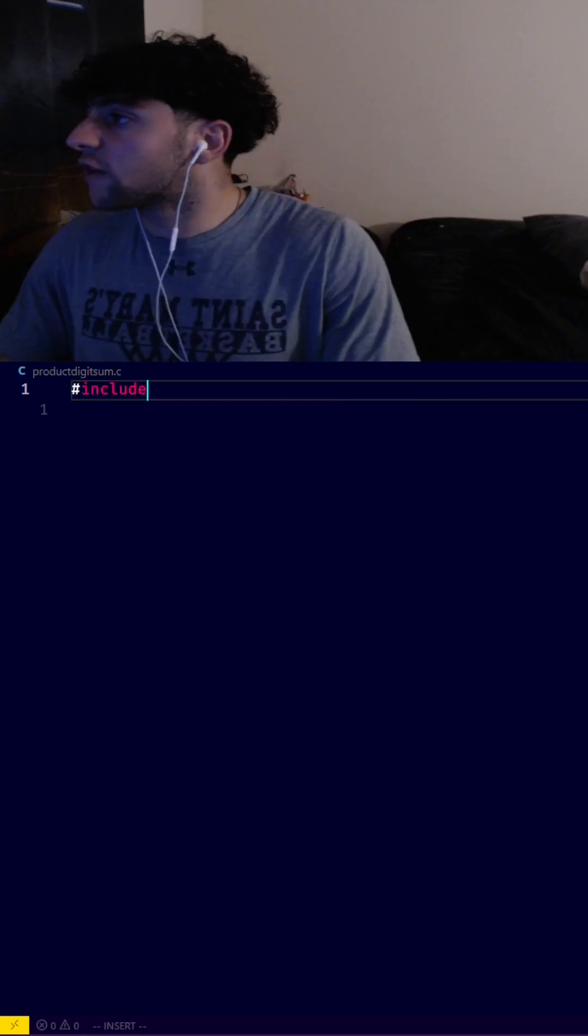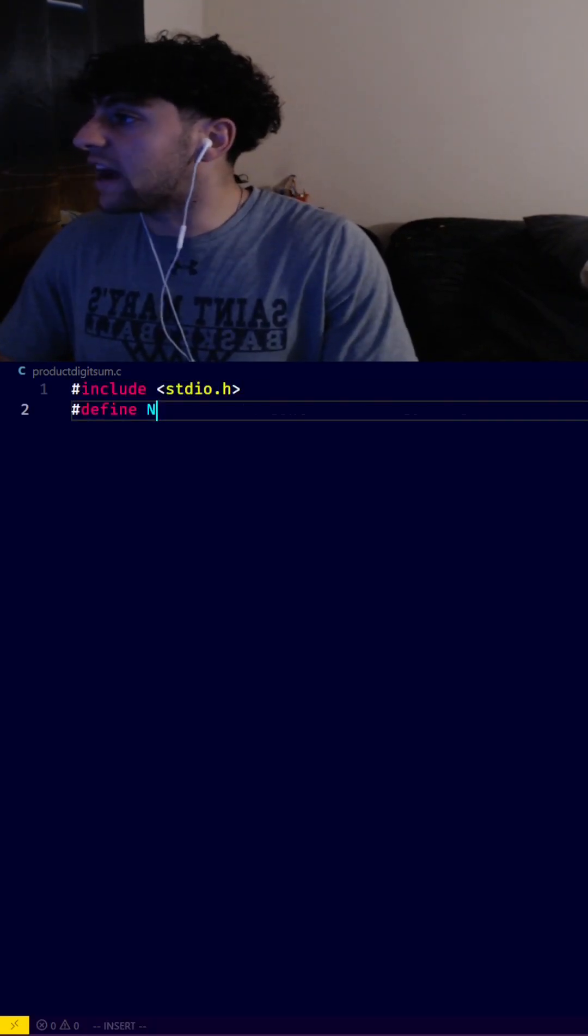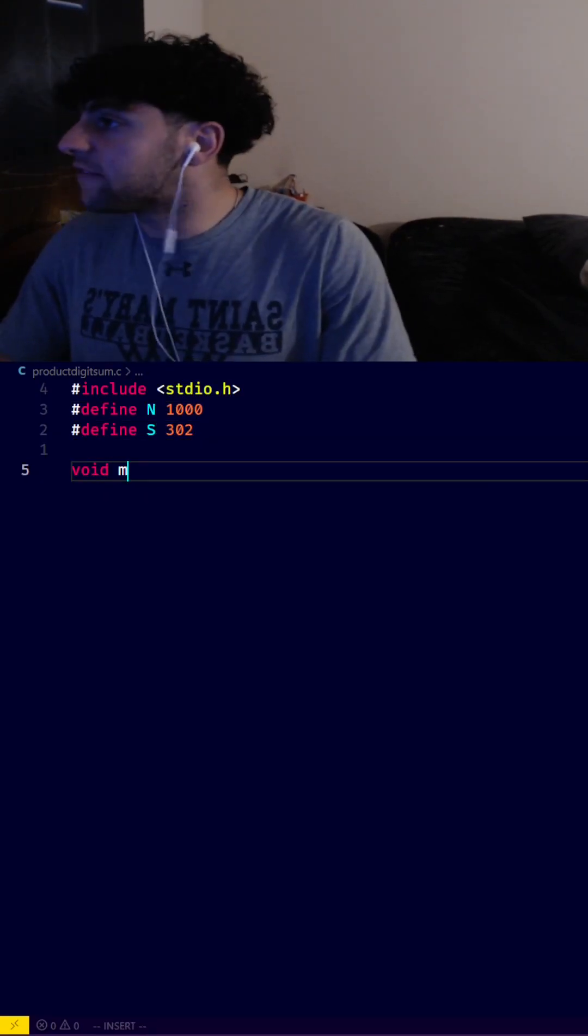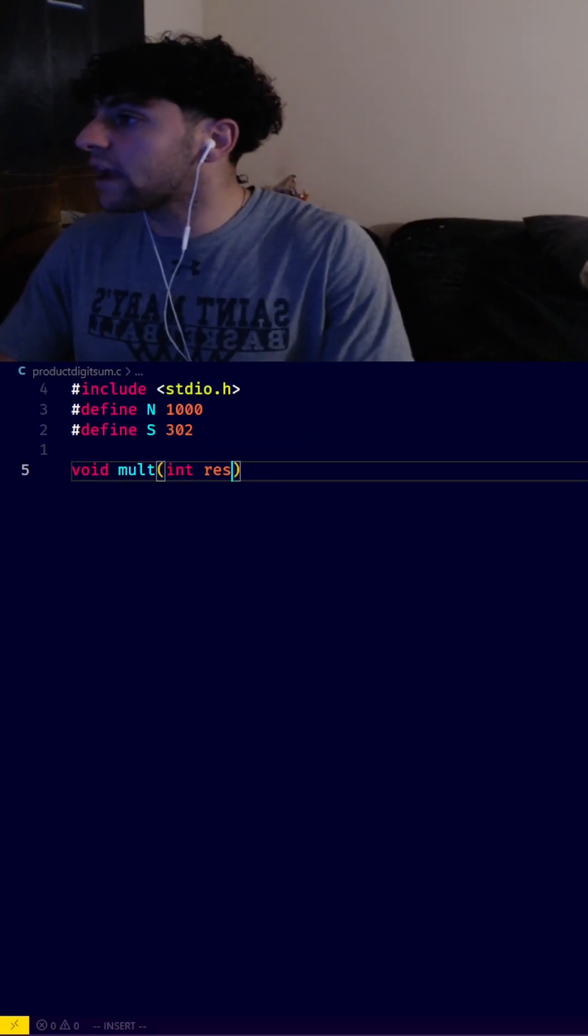With that in mind, let's get to coding. First, we need the standard I/O library. Then we define n = 1000 and s = 302. We need a function called mult that takes an integer array called res.